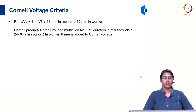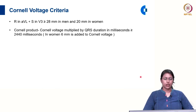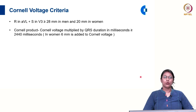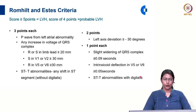The Cornell voltage criteria states that the sum of the amplitude of R in AVL with S in V3, if more than 28 millimetre in men or 20 millimetre in women, is suggestive of LVH. The Cornell product is the Cornell voltage multiplied by QRS duration in milliseconds, and if it is more than or equal to 2440 millisecond-millivolts, it is also suggestive of LVH.